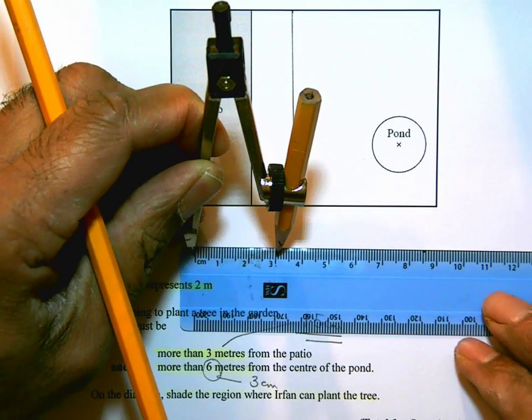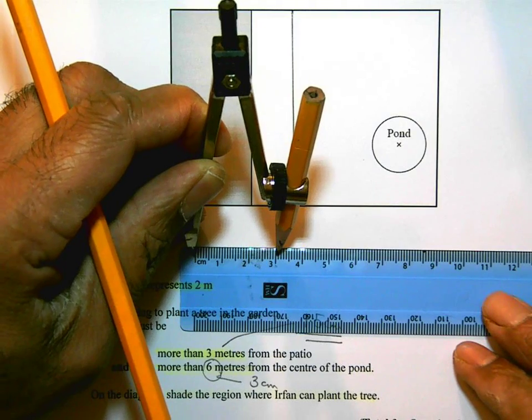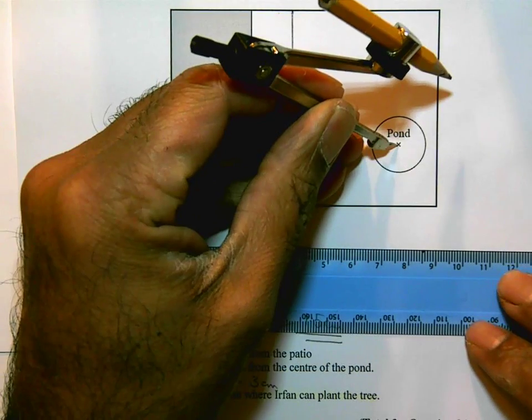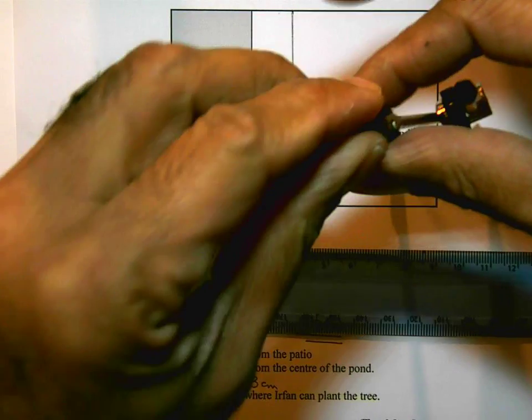All right, so I'm going to draw an arc radius three centimeters. So here it is.